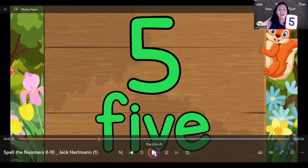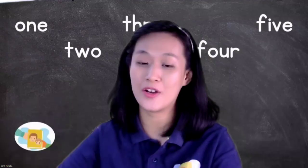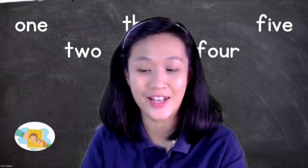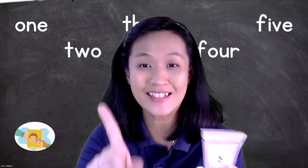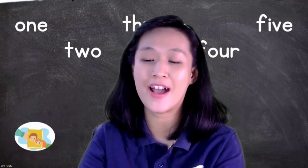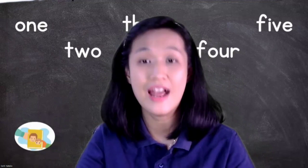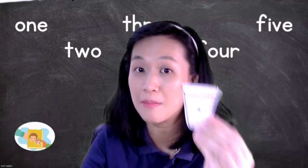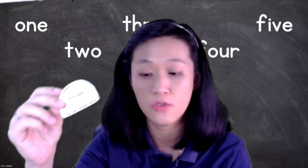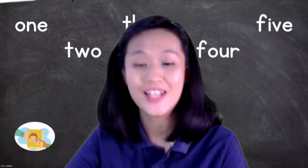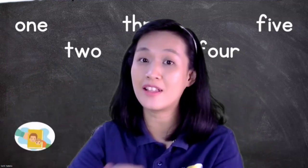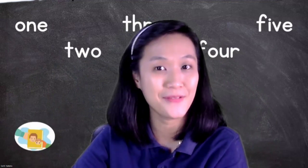Now we are going to spell one by one. You can prepare your ice cream cone — inside your plastic you have an ice cream cone with the number word and number symbol from zero until five. Everybody ready? Spread it on the table and let's check one by one.